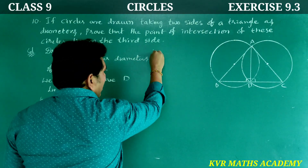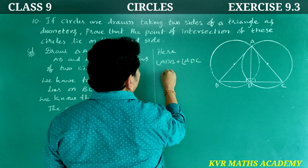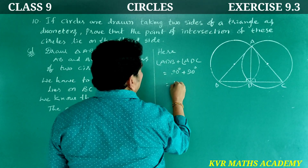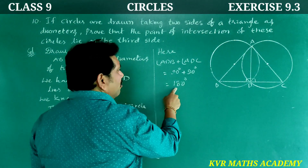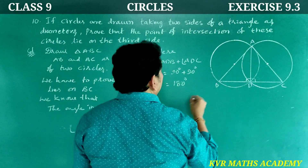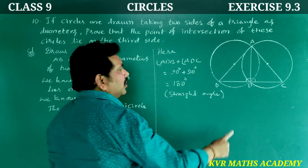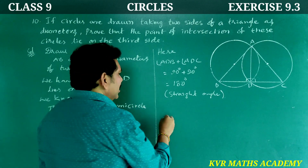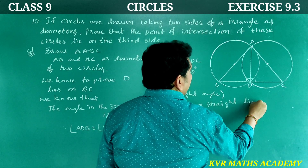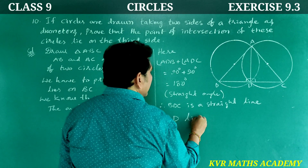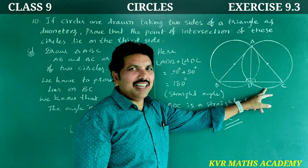Therefore angle ADB plus angle ADC equals 90 plus 90, which is 180 degrees. This means BDC is a straight angle, so BDC is a straight line. Therefore D lies on BC — hence proved.